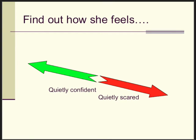I use a simple two-arrow model: find out how she feels. Ideally, a lady planning to deliver her baby should hover between quietly confident and at times quietly scared. If she's overconfident, it's good to help her realize that labor and delivery is not a walk in the park but at least a strenuous run. If she's petrified or anxious, explore that further — because both mindsets are not conducive to a spontaneous normal vaginal delivery.